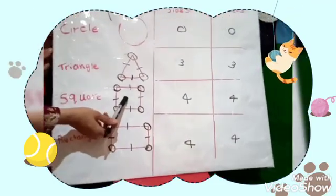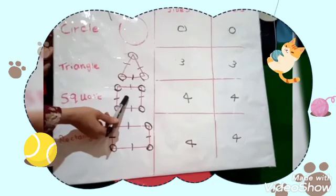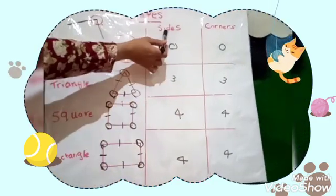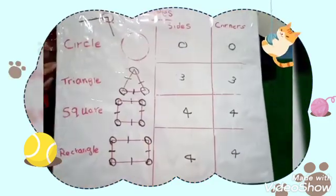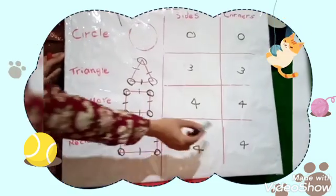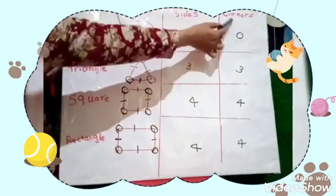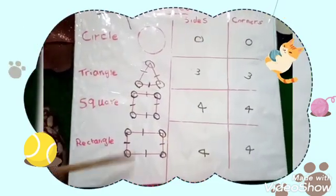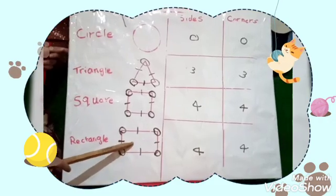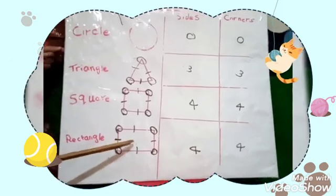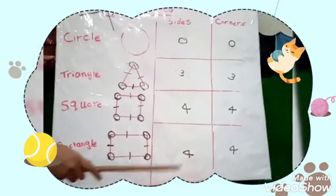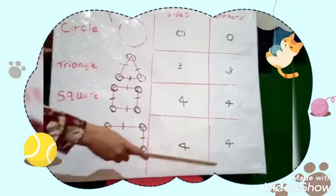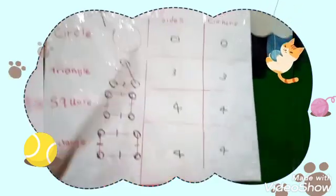What's this? Square. It has four sides. It has four corners. What's this? It has four sides. It has four corners.